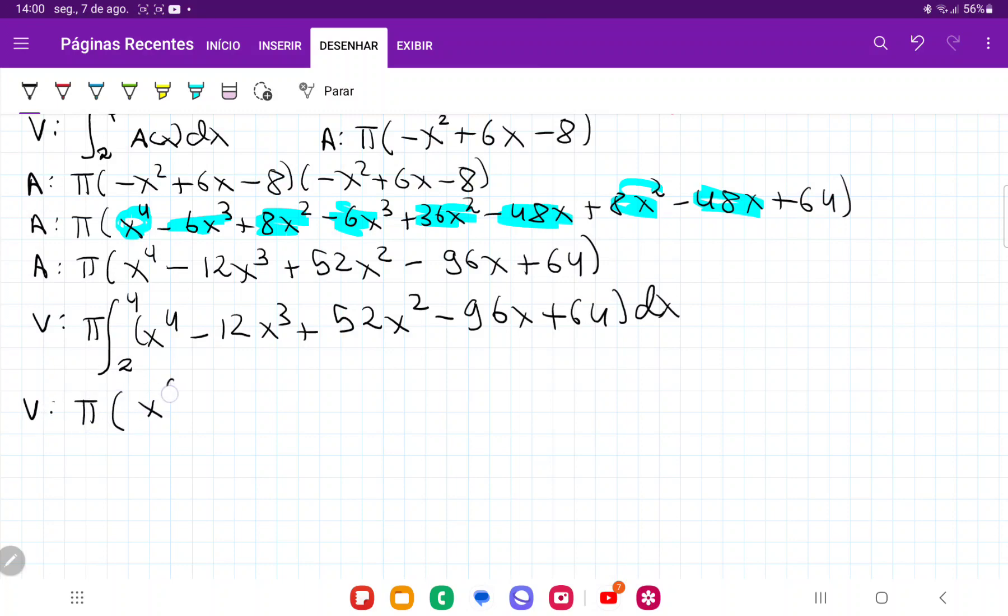So the volume is going to be π times, that gives us x⁵/5 minus, let's see, 12 divided by 4 is -3, so -3x⁴. And then plus 52x³/3. And then -96x² divided by 2, that's going to give us -48x². And then plus 64x. And all of this from 2 to 4. So let me just double check my math. And that appears to be correct.